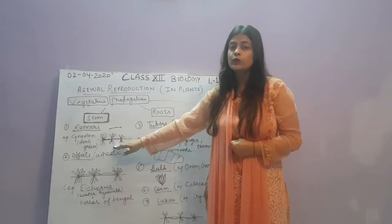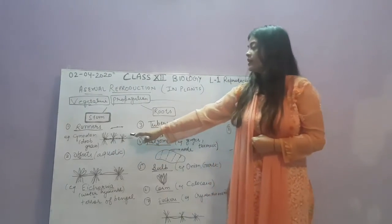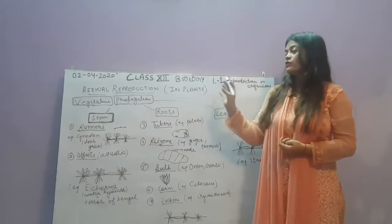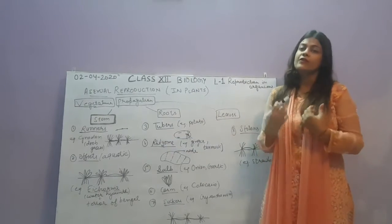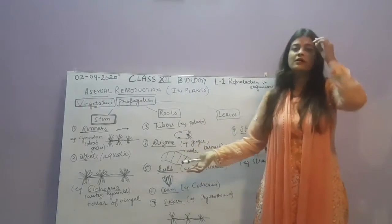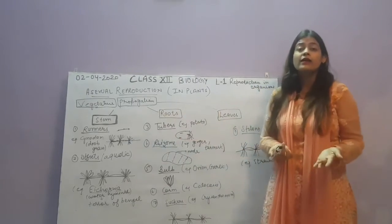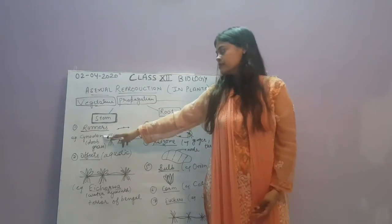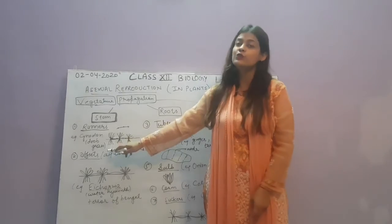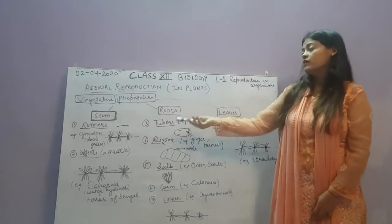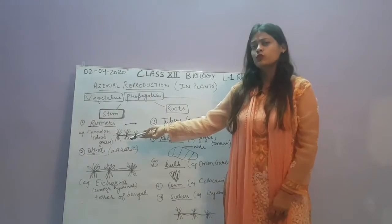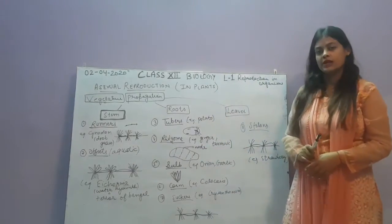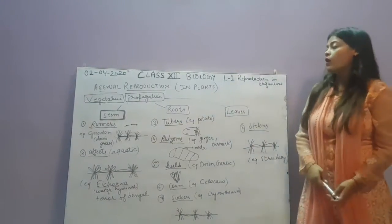New roots and shoots are developed at the node. The stem continues to grow, and under favorable conditions, each node that contacts the ground grows into a new plant. That is why they are called runners — because they run over the ground. An example is Cyanodon, also called doob grass.